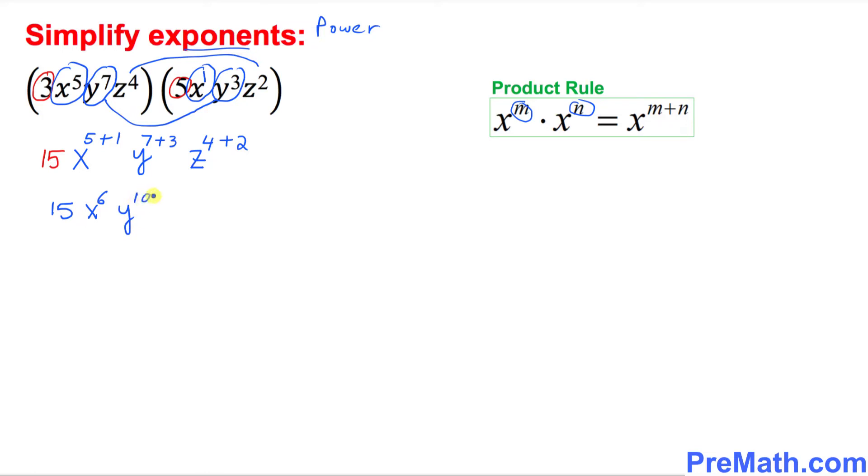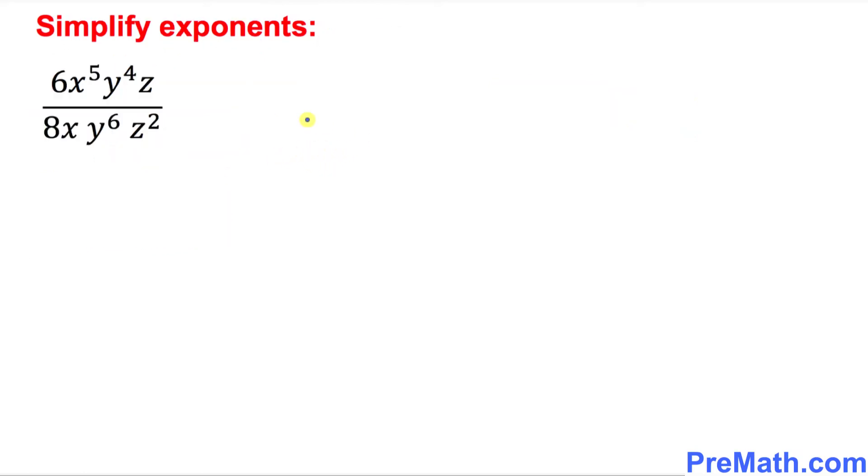So let's simplify our problem. The answer is going to be 15, x power 5 plus 1 is 6, y power 10, and z power 6. And that is our simplified answer.